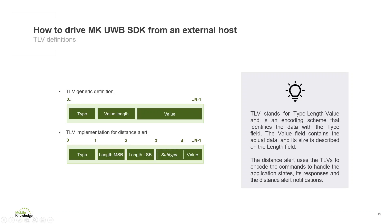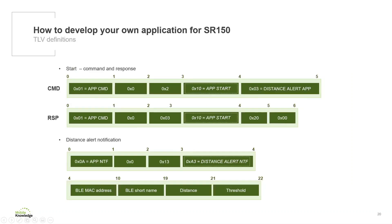The Distance Alert is started with the command TLV, which is identified by the app command type. It contains 2 bytes in the value field: the app start subtype and the Distance Alert tag, which is used to indicate the Distance Alert is selected. After sending this command, we expect the response with the same type and subtype, but this time the value field has a result code of 0x200 hexadecimal, which stands for success. If a different value is received, that will mean that an error has occurred.